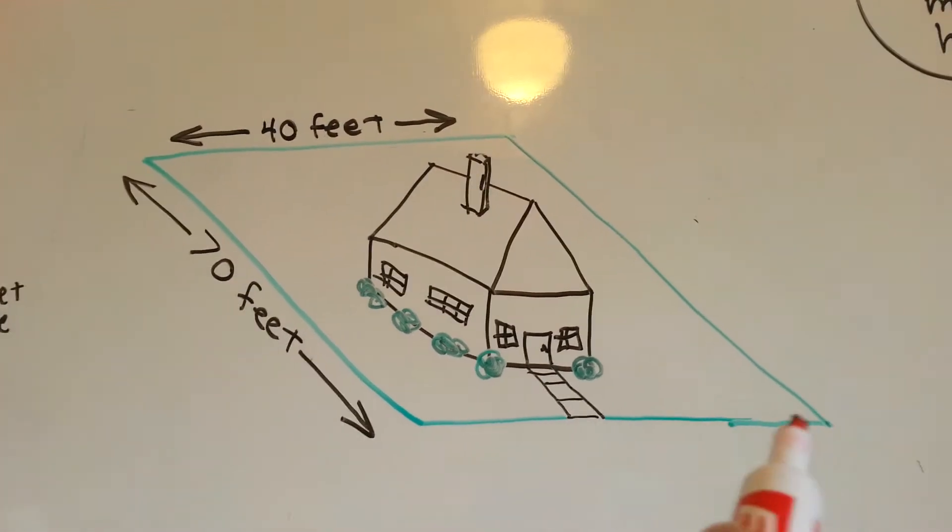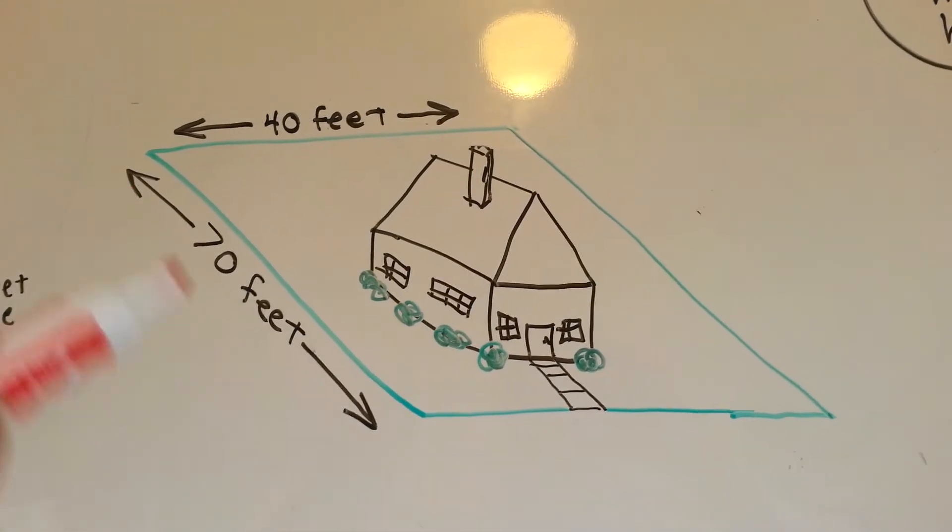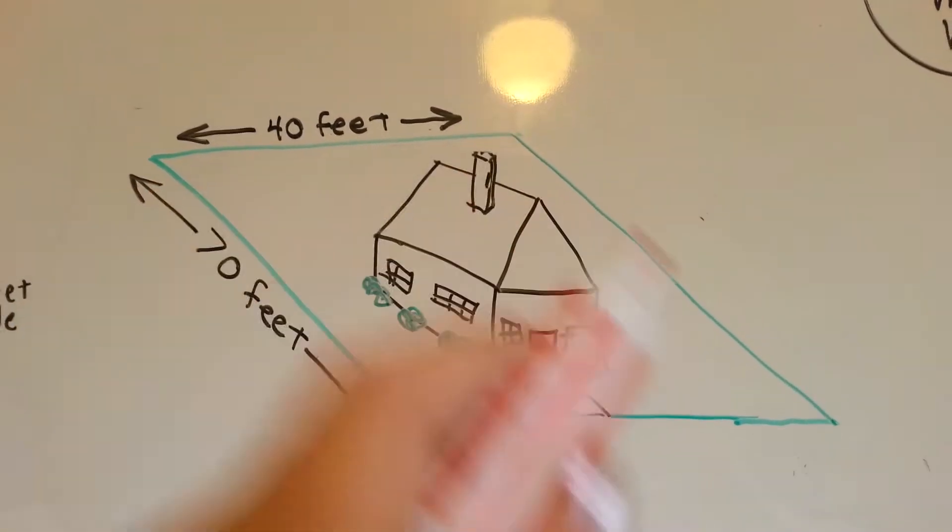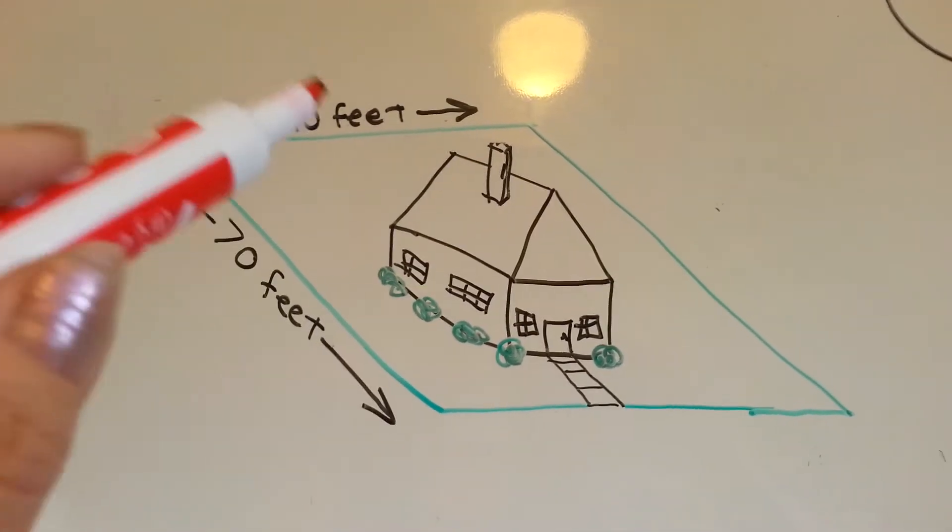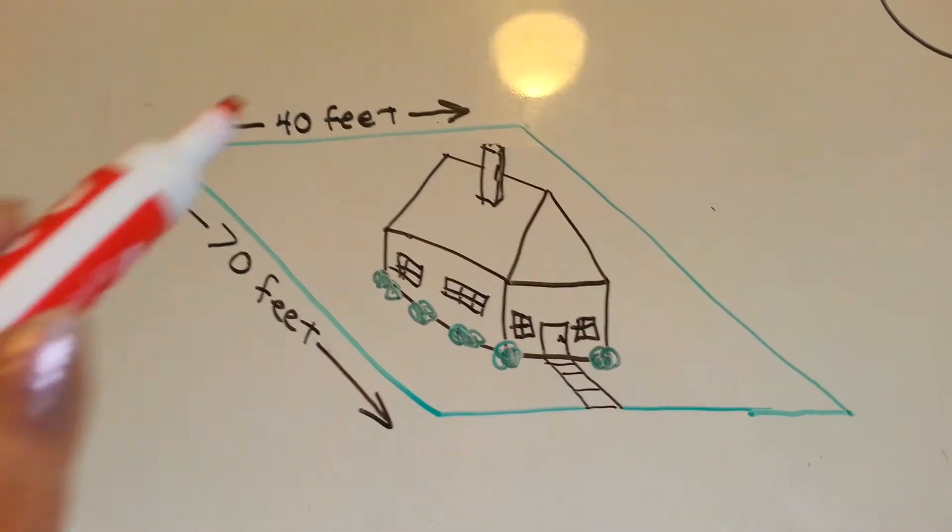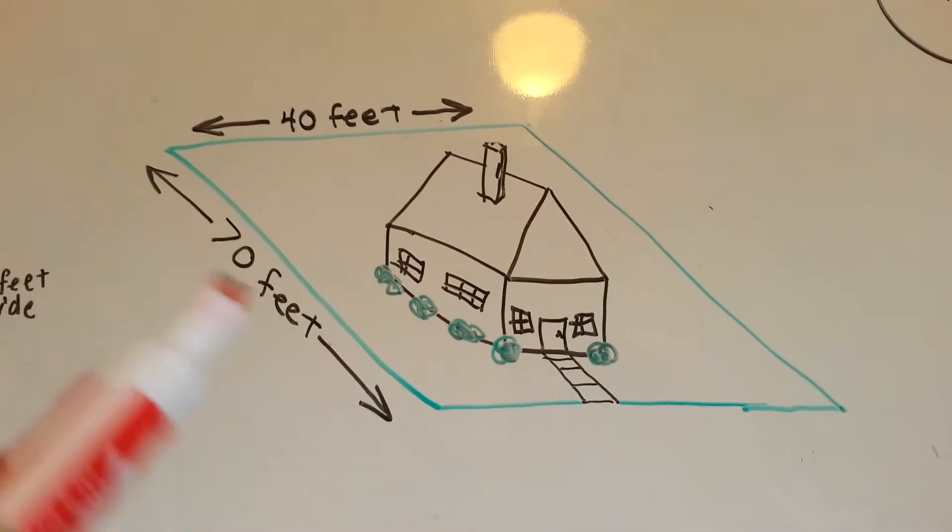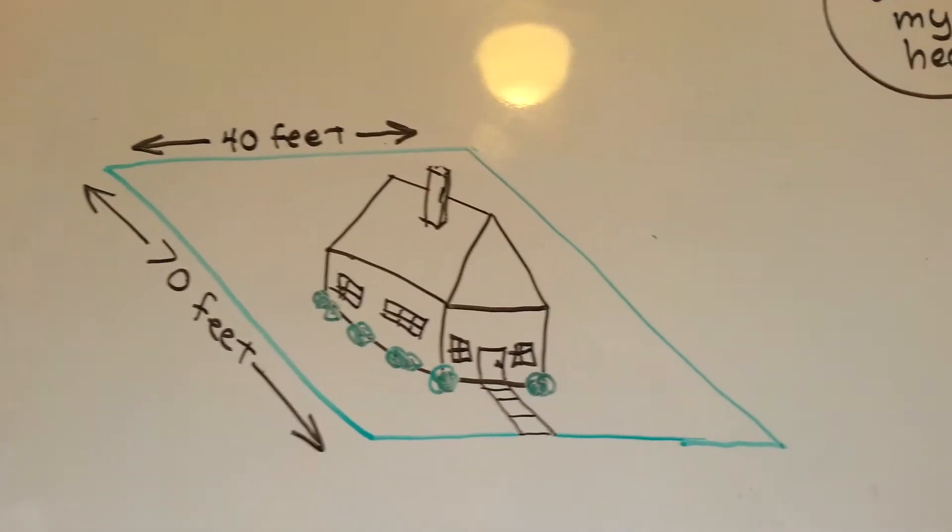If they need 40 feet over here, then they need 40 feet over here. And if they need 70 feet here, they need 70 feet here, if it's a perfect rectangle. You just add up those measurements around the outside edge and that's how much fencing you would need.